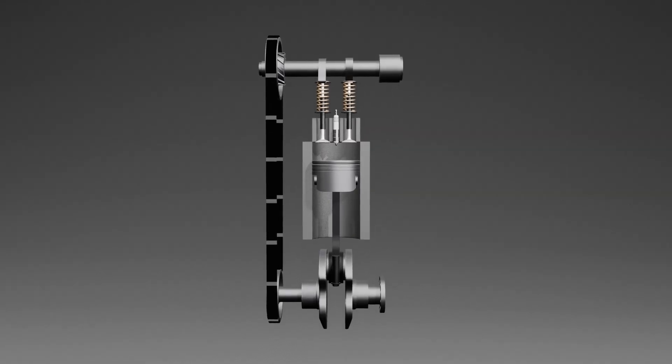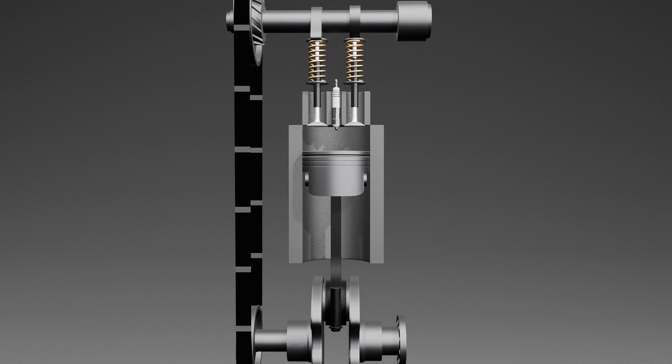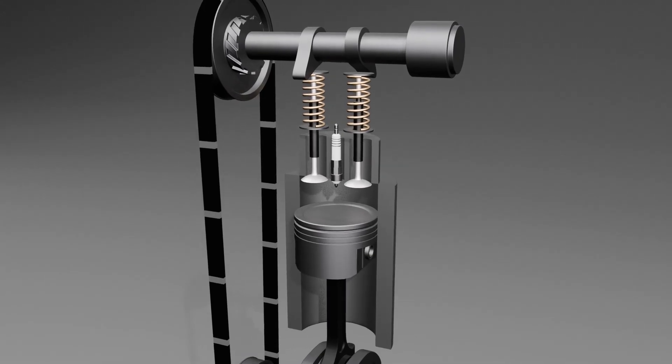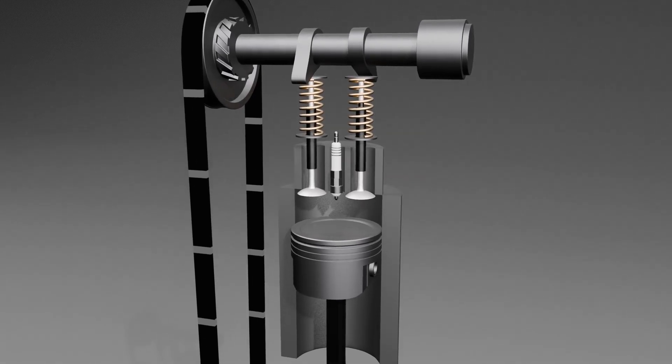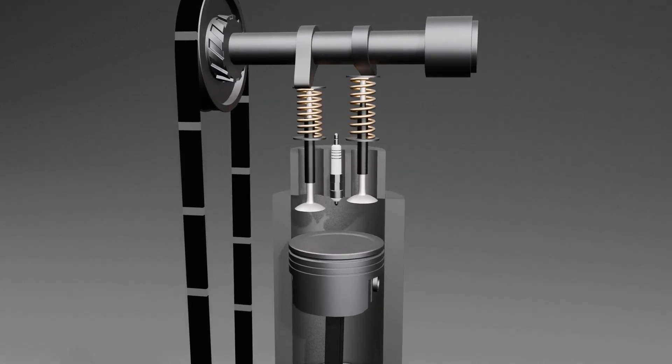The four-stroke cycle begins with the intake stroke. The cylinder is a hollow tube with a piston that moves up and down inside it. During this stroke, the piston starts at the top of the cylinder and pulls down by the crankshaft.